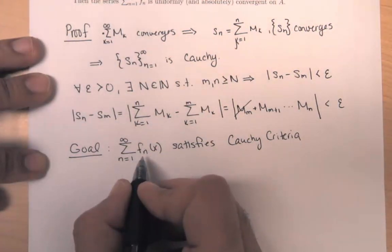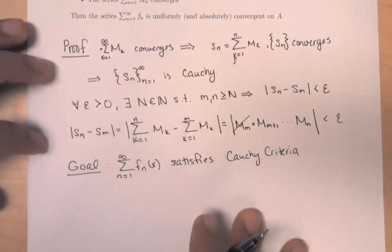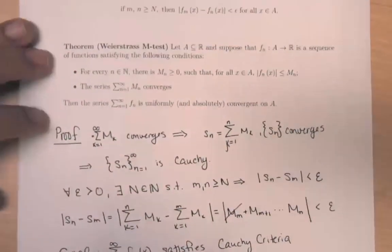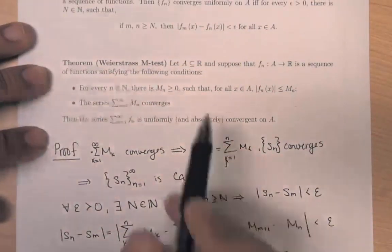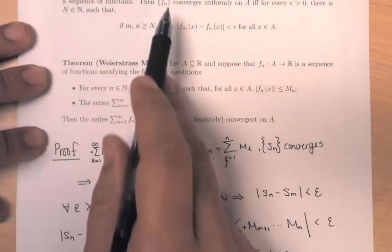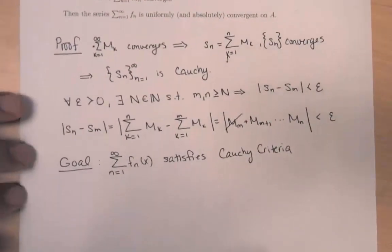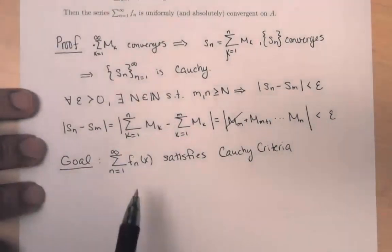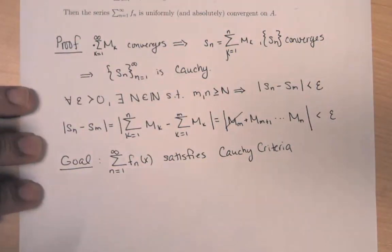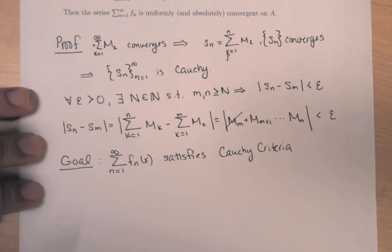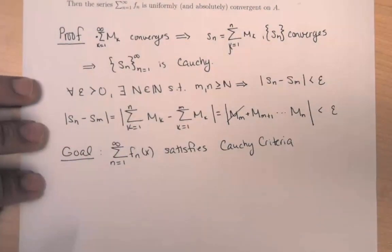When I say this satisfies the Cauchy criteria, you might say: wait, the Cauchy criteria is talking about a sequence of functions, but we're talking about a series of functions. Remember, a series of functions is just a sequence of functions in disguise — in particular, the sequence of partial sums.